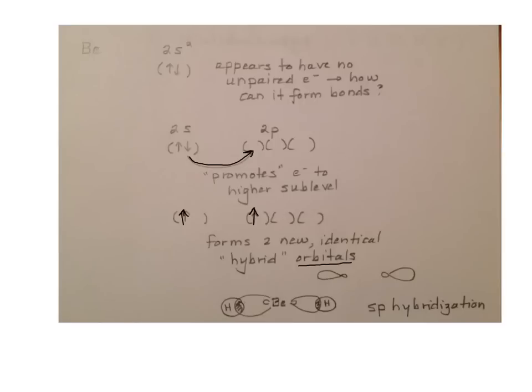But more than that, it actually forms two new hybrid orbitals. Remember, an orbital is just a shape, so we're forming two new shapes. These shapes have a big lobe and a little lobe. The large lobe is the bonding side, and the little lobe is the anti-bonding side.